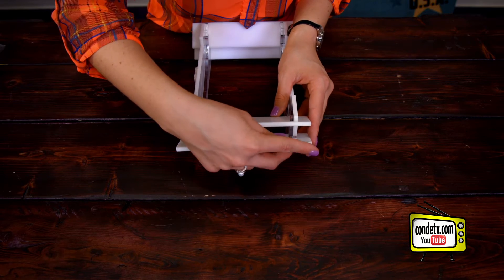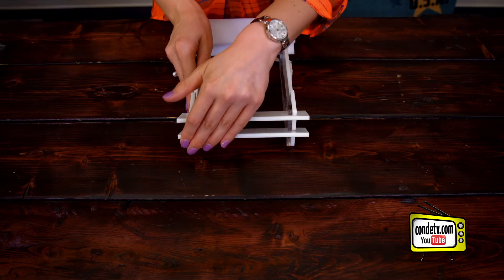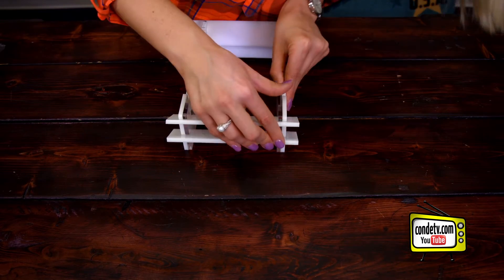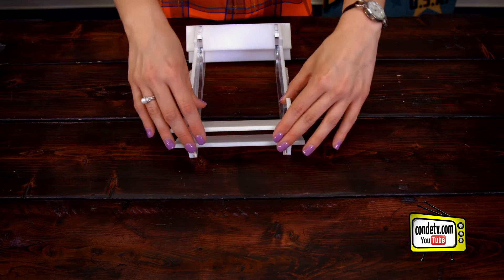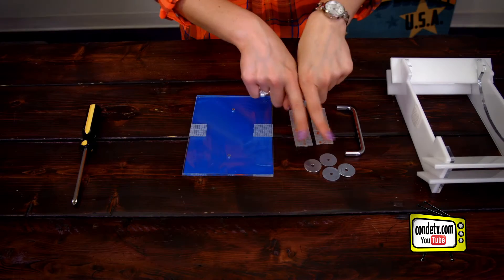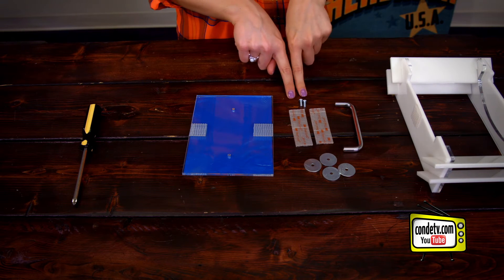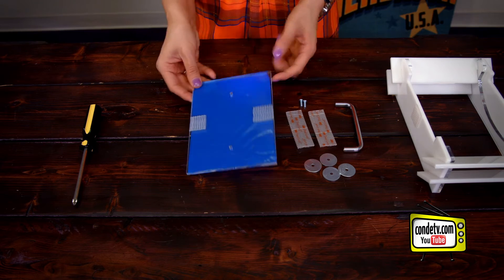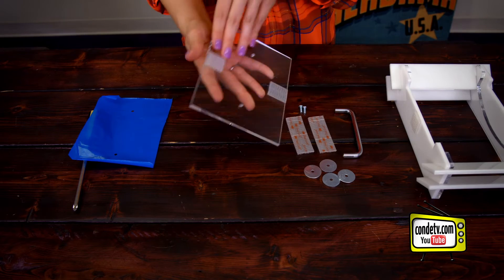And now it's time to assemble our lid. This is everything that came in the lid kit: we have the metal handle, four washers, two screws, two longer pieces of velcro, one lid, and then some protective paper that we're going to want to remove before we get started.